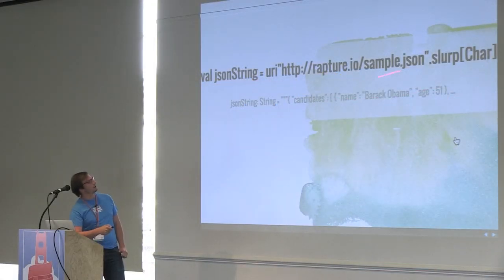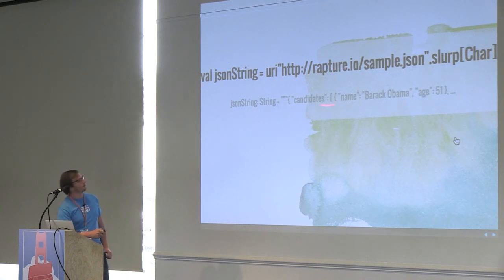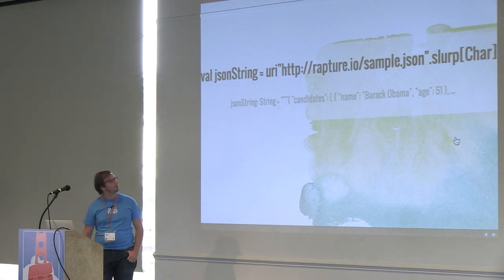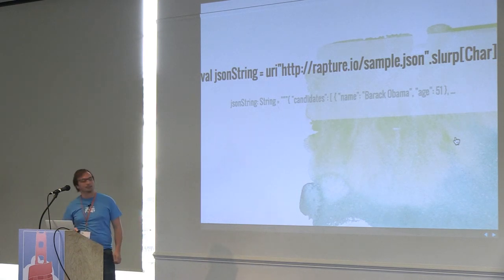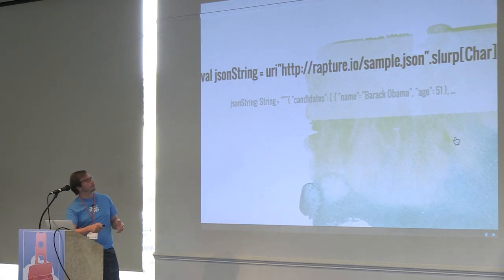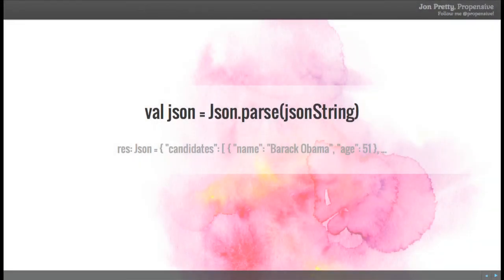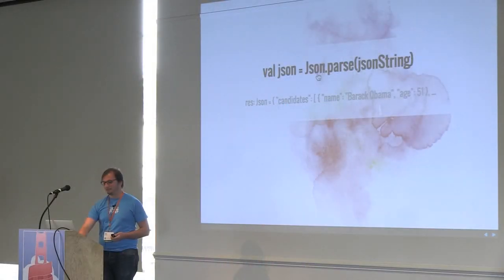Having imported the encoding, we can slurp the resource in again as character data, and we've got some JSON - basically a very brief description of the 2012 election. This is a string: given characters as our type for data to be slurped, a string is the result, in the same way that a byte type resulted in the type bytes. Rapture is also a JSON library. Given that string, we can parse it with JSON.parse and get something of type JSON.